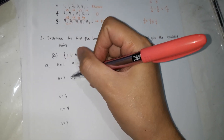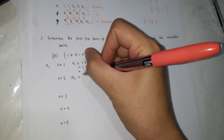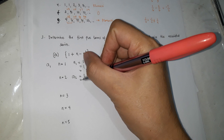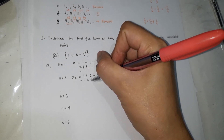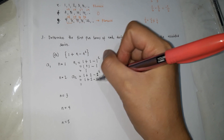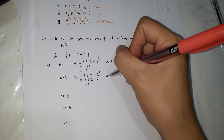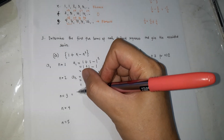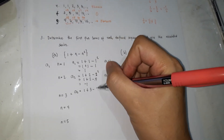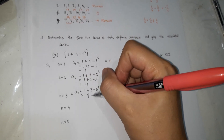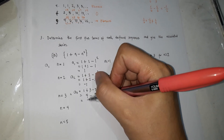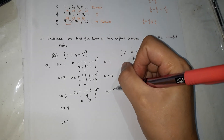For a3, n=3: 1 plus (3 minus 3²) = 1 plus 3 is 4, minus 9 — that's 4 minus 9 which is negative 5. So a3 is negative 5.